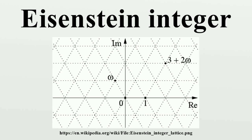In mathematics, Eisenstein integers, also known as Eulerian integers, are complex numbers of the form where a and b are integers and omega is a primitive cube root of unity.